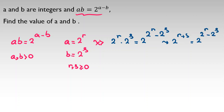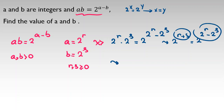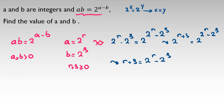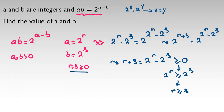When we have 2 to the X equals 2 to the Y, we can conclude X equals Y. So the exponents must be equal: R plus S equals 2 to the R minus 2 to the S. Since R and S are at least 0, R plus S is at least 0, so 2 to the R minus 2 to the S is at least 0, meaning 2 to the R is greater than or equal to 2 to the S, and therefore R is greater than or equal to S.